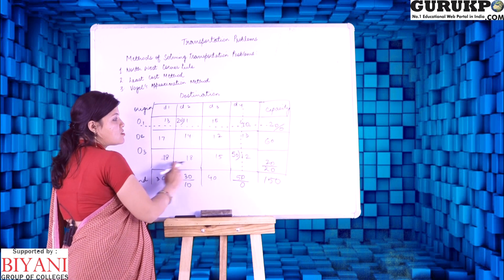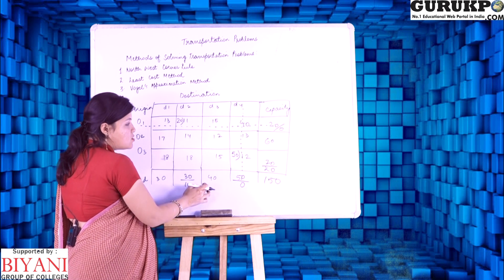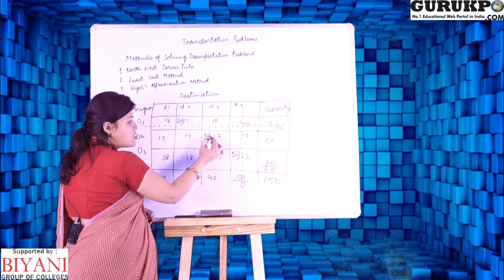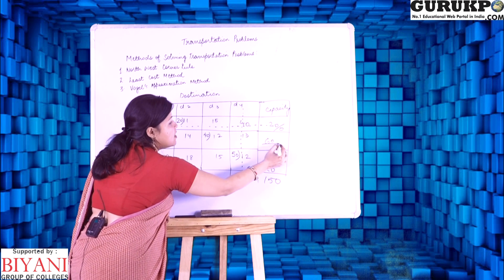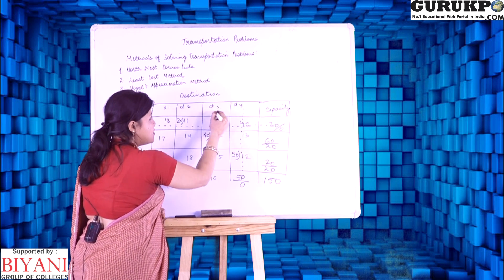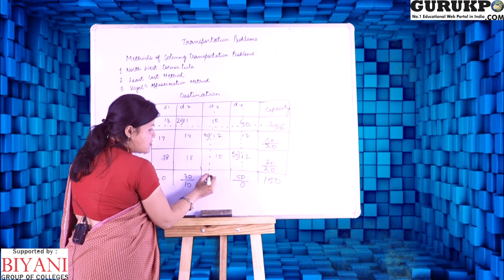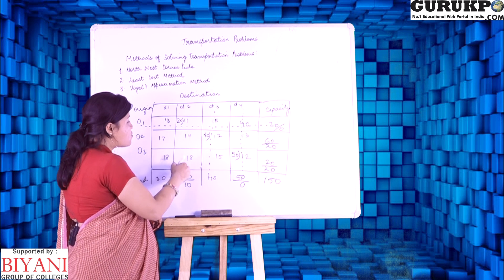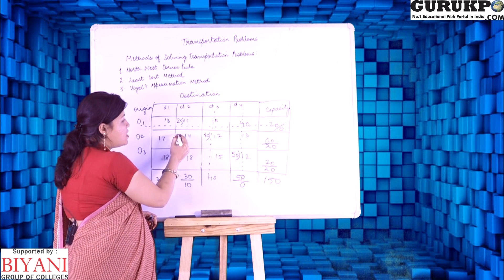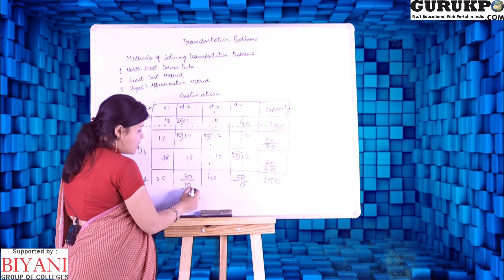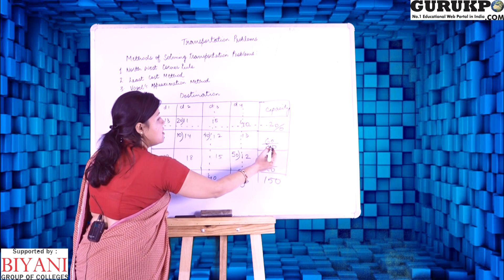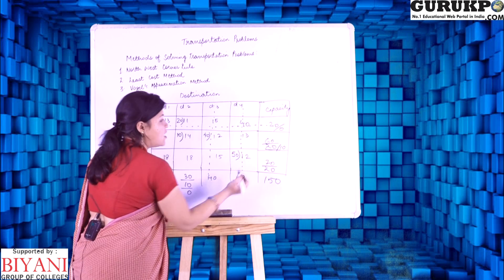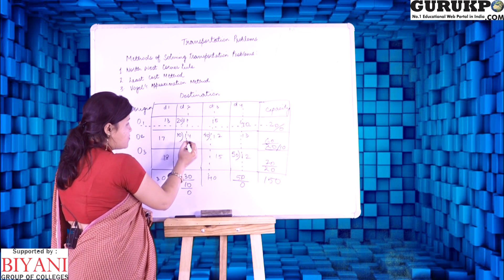Now, again the least cost in the remaining cost is 12. So, we will allocate here 40 units as the requirement is 40 and here 20 is left and the demand is satisfied. Now, from the remaining cost, the least cost is 14 and the remaining demand is 10. So, here it comes to 0 and here it is left out is 10, it is satisfied.